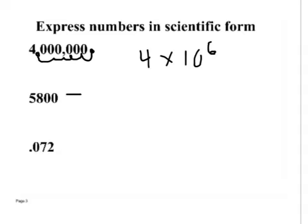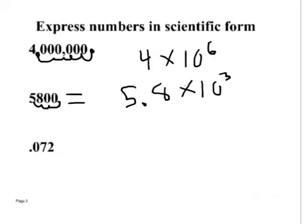Someone tell me what's 5,800 look like in scientific notation. Raise your hand. Blaine? 5.8 times ten to the third. Good. All right, I went from here to here, so I had to move it three times.